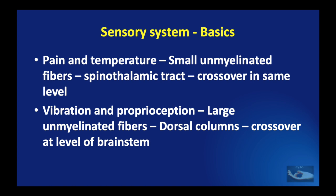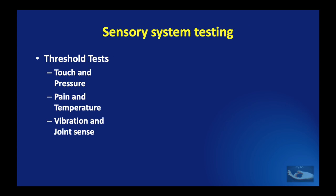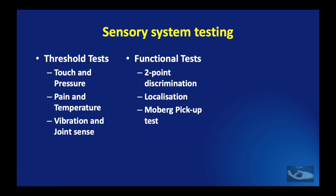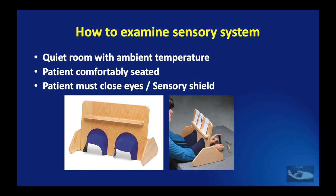The main sensory modalities to be tested are tactile sensibility, superficial and deep pain, pressure, joint sense, vibration, temperature, and two-point discrimination. Testing falls into three categories: threshold tests for touch, pressure, pain, temperature, vibration, and joint sense; functional tests including two-point discrimination, localization, and the Moberg pickup test; and objective tests including the ninhydrin test and wrinkle test. Testing must be done in a quiet room at ambient temperature, with the patient comfortably seated and eyes closed or shielded.